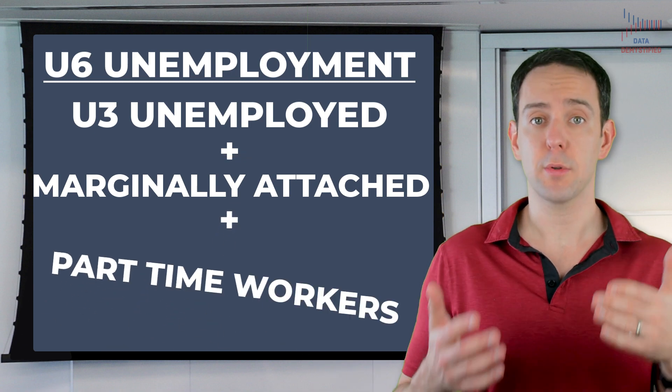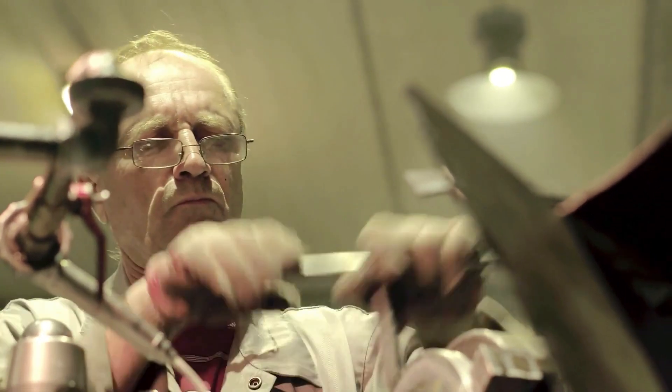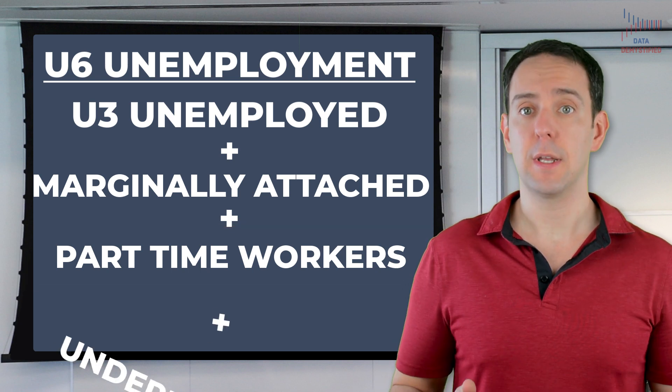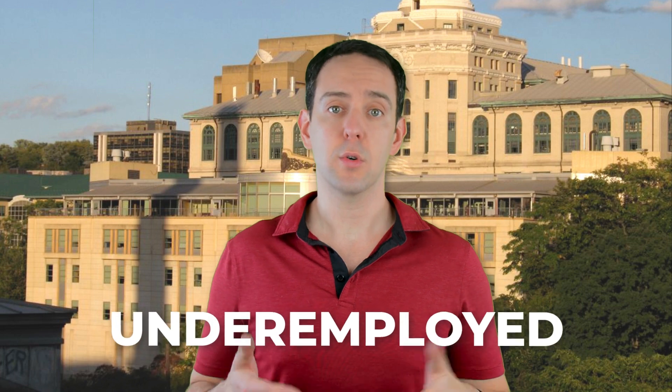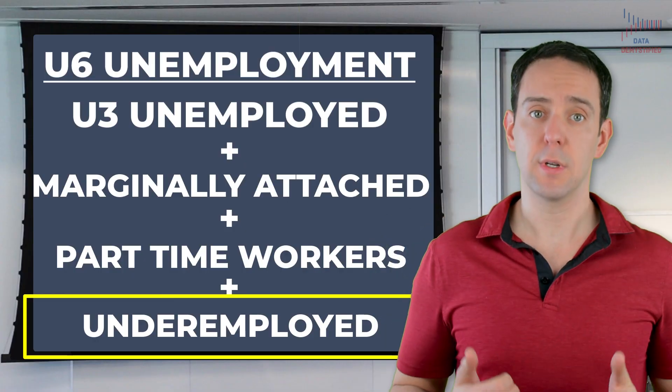Second, it includes workers employed part-time for economic reasons. These are workers who would love a full-time job but are stuck working part-time because they can't find a full-time job at this particular moment. This would be our factory worker who is working part-time even though, given the chance, he would gladly take a similar full-time job. He would also be included in U6 unemployment. And third, it includes underemployed workers — those who are working in jobs that they are overqualified for. This would be our engineer who is working as a hostess because there aren't any other good engineering jobs in her area. She is not utilizing her skills to their fullest, earning far less than she could otherwise, and is considered underemployed. She would also be included in U6 unemployment.